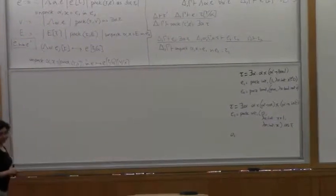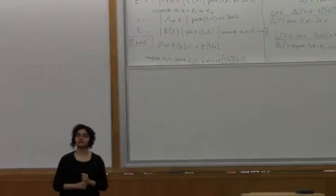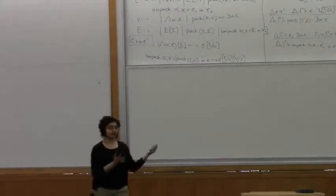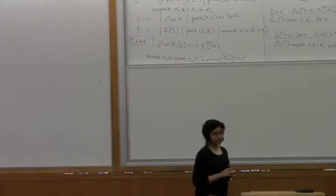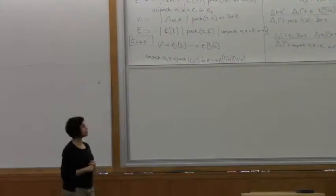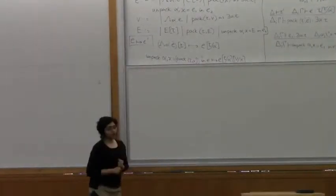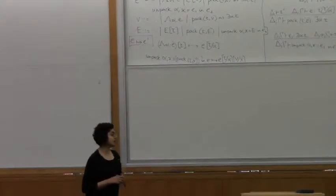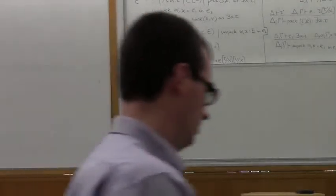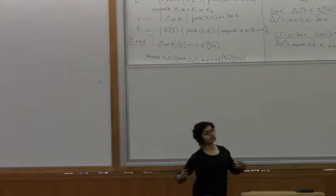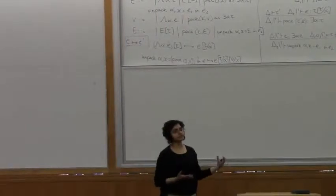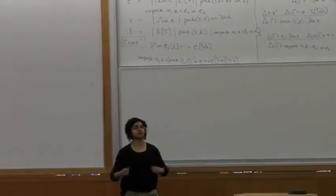Yesterday we finished talking about step-index logical relations being used to prove type safety in the presence of recursive types. Then I started to talk about the use of logical relations for proving contextual equivalence of programs — to prove that two programs are contextually or observationally equivalent. Today we're going to start by taking the unary logical relation defined yesterday for type safety and turning it into a binary logical relation. A lot of the ideas we've already built in that unary setting for type safety extend over to equivalence.